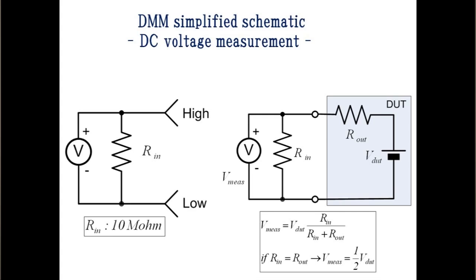However, input resistance of typical DMMs is around 10 mega ohm when you measure more than 10 volts. When output resistance of the DUT is large, it causes an error.